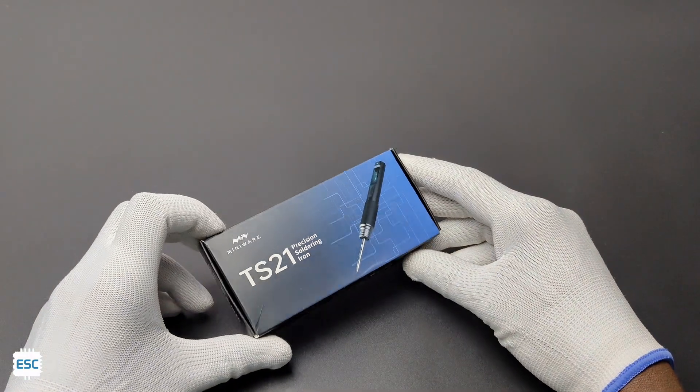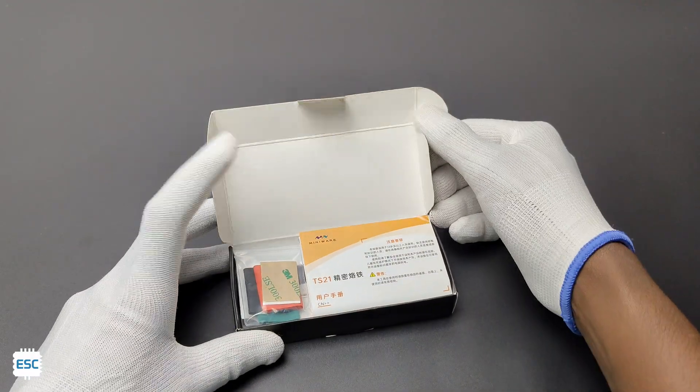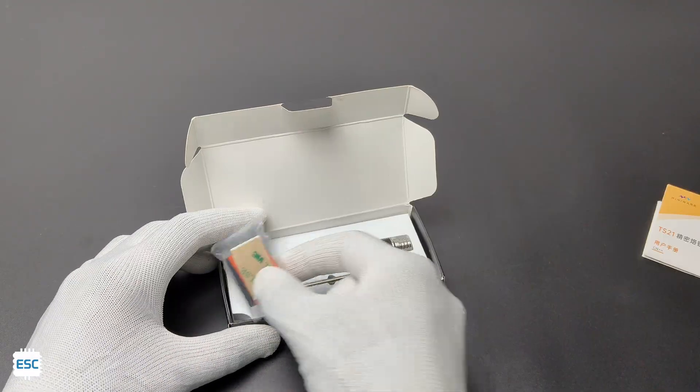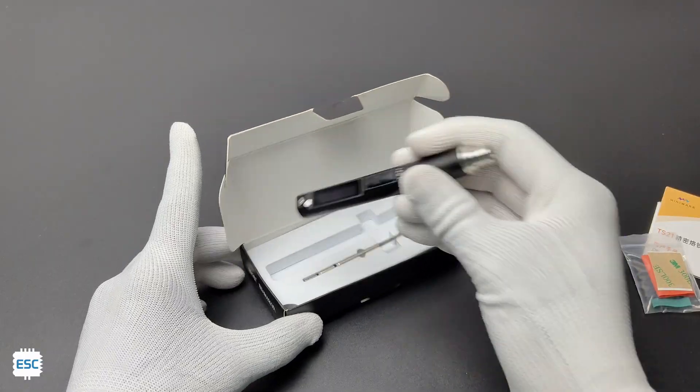The Miniware TS21 comes in this small box. Inside the box we got a manual, a bag of colorful sleeves, then the soldering iron and the tip.